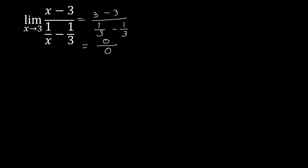What we are going to do is to manipulate our given functions so that we can have a limit for this. So we go back. This is the limit of x minus 3 over 1 over x minus 1 over 3. By the way, this is what we call a complex fraction or the nested fraction — we have a fraction within a fraction.